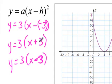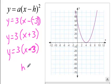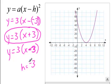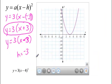If H is negative 3, then the graph goes 3 units to the left. But remember, when you put a negative 3 into where H is, it's going to look like this. So when H is negative 3, it's going to change the sign to look like this on the inside.